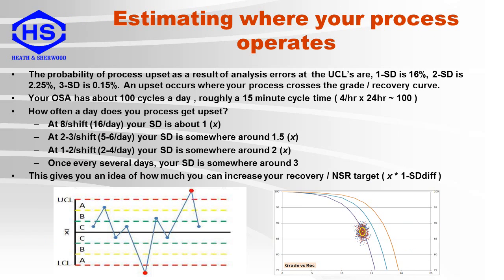Using statistics you can get an idea of how far away from the grade recovery curve or point your plant normally operates. When the process crosses this point, there will be a fairly quick and noticeable change or upset from the recovery or concentrate grade set point. An OSA has a cycle time of about 15 minutes, which is approximately 100 measurements per day. Based on the amount of upsets crossing the grade recovery curve, you can estimate how far away your plant normally runs. If you have 16 upsets per day, you operate about 1 standard deviation from the grade recovery curve. At 5 to 6 upsets per day, it's about 1.5 standard deviations. At 2 to 4 upsets per day, it's about 2 standard deviations. And if it's once every several days, it's about 3 standard deviations.